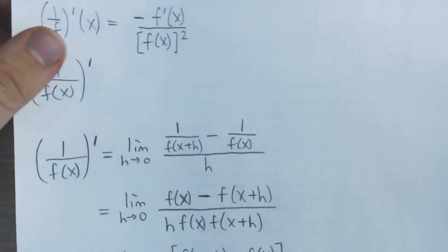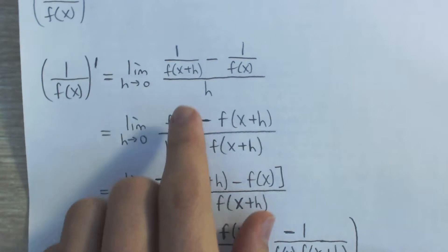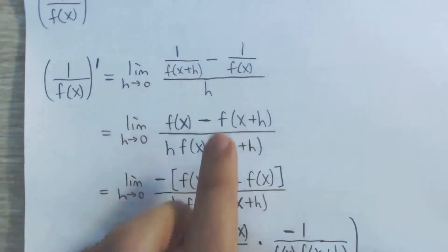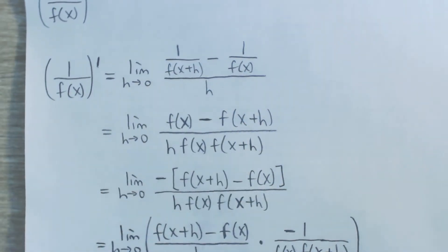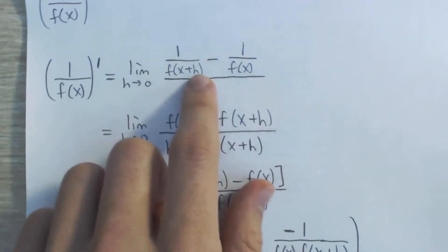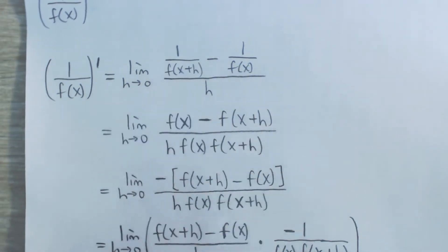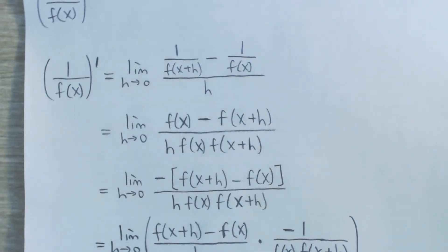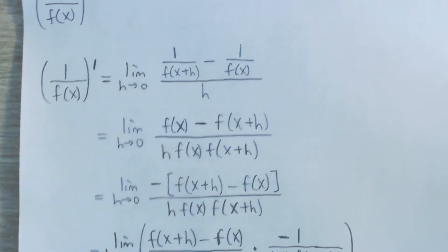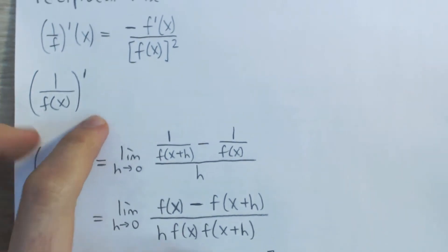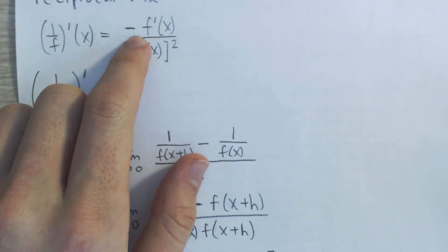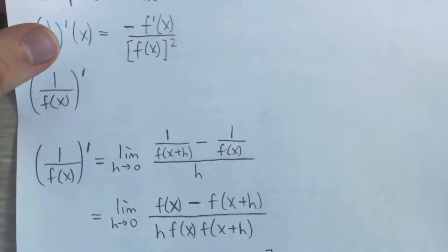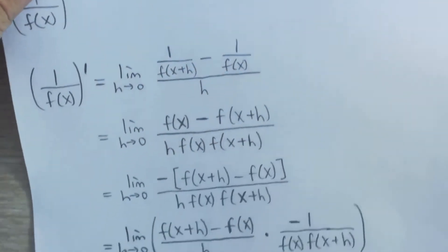Right here, we can't just plug in h equals 0 because we'd get 0 over 0, but we can use algebra to manipulate this fraction in order to evaluate the limit and end up with what we want: negative times the derivative of f divided by f of x squared.